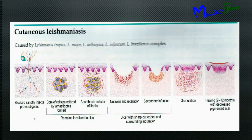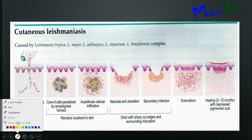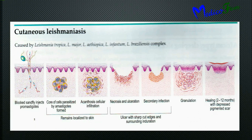Cutaneous leishmaniasis: when the sandfly injects the promastigoid, there is accumulation of inflammatory cells around the amastigoid form, which is transformed from the promastigoid. Mainly macrophages accumulate, followed by acanthosis and cellular infiltration, remaining localized in the skin. There is ulceration and necrosis of the infected tissue and skin, predisposing to secondary bacterial infection. The ulcer has a sharply cut edge with surrounding induration. Healing occurs by granulation formation and takes around 2 to 12 months, leaving a depressed and pigmented scar.